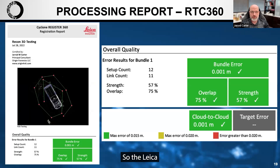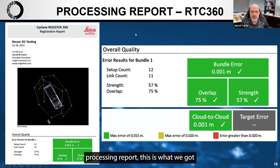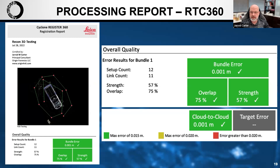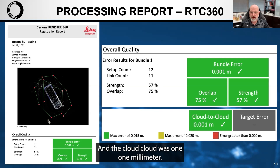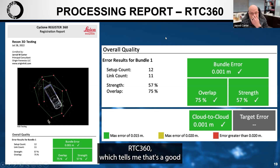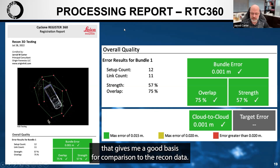The Leica processing report from the RTC 360 gave us a bundle error of one millimeter, 75% overlap, a strength of 57%, and a cloud-to-cloud of one millimeter. We got some really good results from the Leica RTC 360, which gives me a solid basis for comparison to the Recon 3D data.